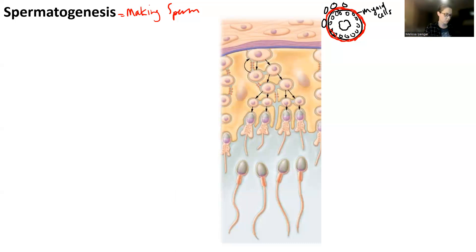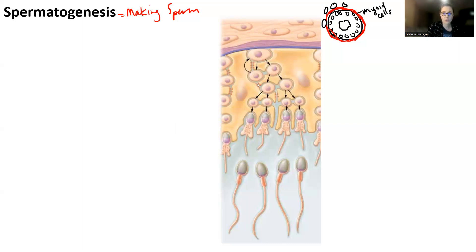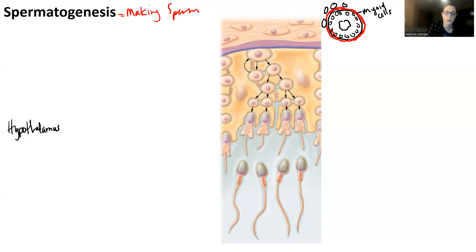Let me get my cheat sheet. I'm going to do a flow chart sideways and use my seminiferous tubule diagram towards the end. Essentially, you want to think about starting with the hypothalamus. We're going to look at the hormonal control of spermatogenesis, and then think about what's happening to the different cells in the seminiferous tubule.